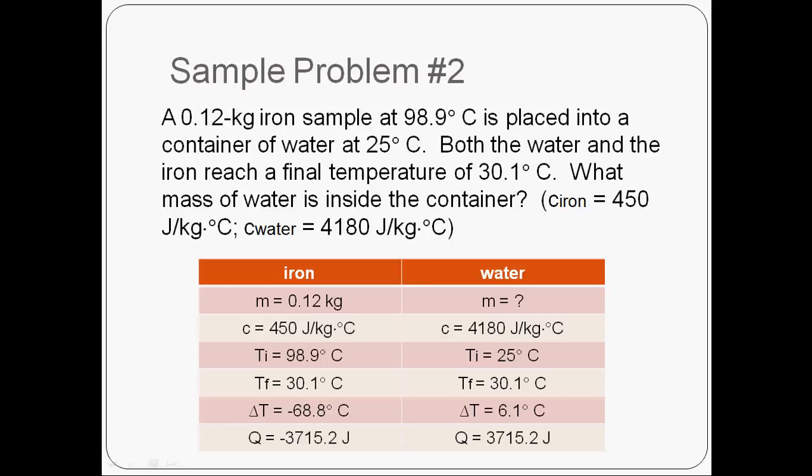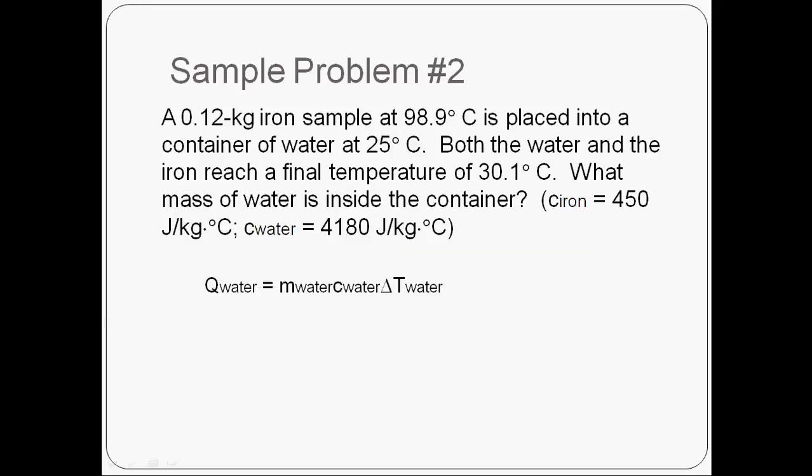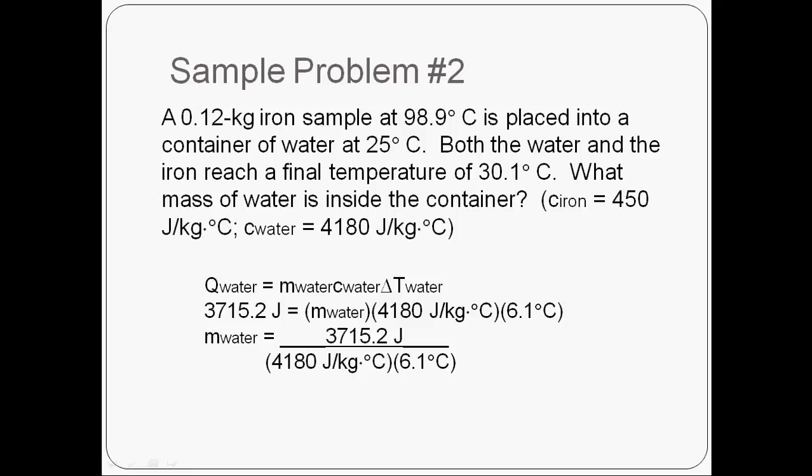Now in my water column, I only have one unknown, so I can solve for the mass. Again, using that same equation, Q equals mc delta t, this time using all my values on the water side. So I'll plug in everything that I know. I'm solving for the mass. So to solve for the mass, get it by itself on one side, I'll divide both sides by 4,180 and 6.1. And then I just plug it into my calculator, and I determined that we must have had 0.146 kilograms of water. Wa-bam, we did it.